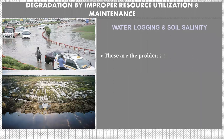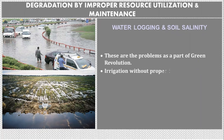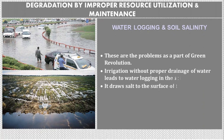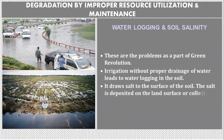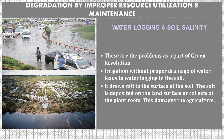Another impact is water logging and soil salinity, which are problems associated with the green revolution. Irrigation without proper drainage leads to water logging in the soil, which draws salt to the surface. The salt is deposited on the land surface or collected at the root zone, damaging agriculture.